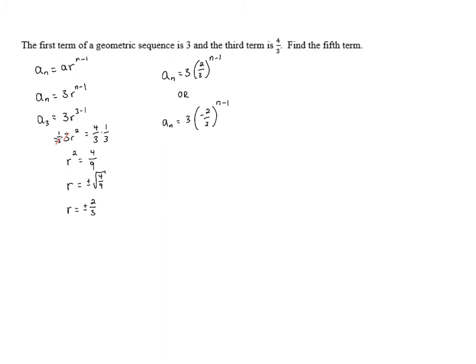So there are two possibilities here. However, this is not actually a problem because we know the first term is 3, we know the third term is 4/3, and we want to figure out the fifth term. So in essence, if the first formula is the right one, all of the terms are going to be positive. If the second formula is the right one, they're going to be alternating because each time we multiply by a negative. So the first term will be positive, the second will be negative, the third will be positive, the fourth will be negative, and the fifth will be positive.